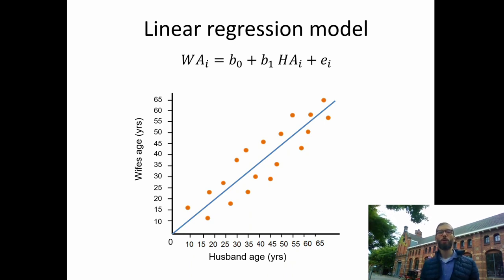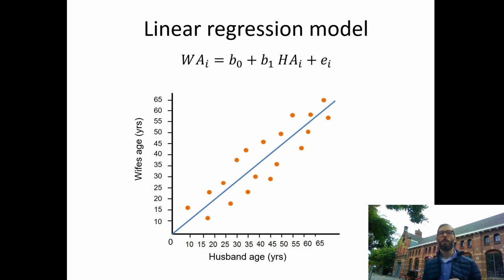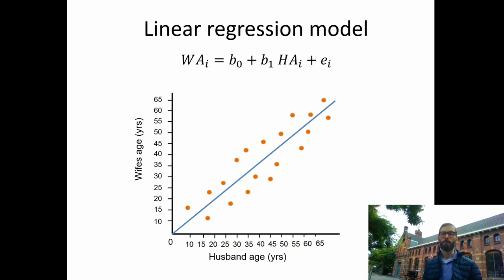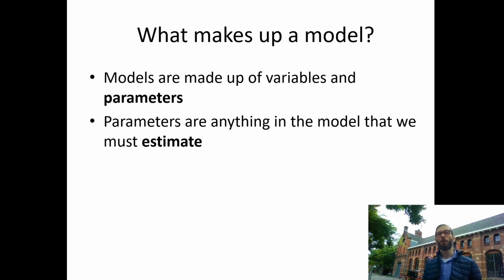The linear regression formula has an outcome variable — wife's age for every individual i — as a function of b0 (the intercept: how old is a wife of a husband who is zero years old), plus the slope b1 times the husband's age for every individual. Every orange point deviates a little bit from the blue regression line — those deviations are called measurement error or prediction error, represented by epsilon sub i. If we add that term, we have a formula that describes all of the data. Models are made up of variables (things we've measured) and parameters (things we're trying to estimate). This model has two variables — husband's age and wife's age — and two parameters — the intercept and slope — plus prediction errors epsilon sub i.